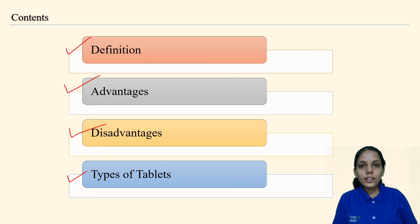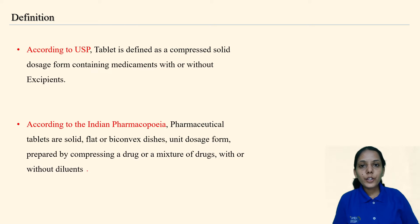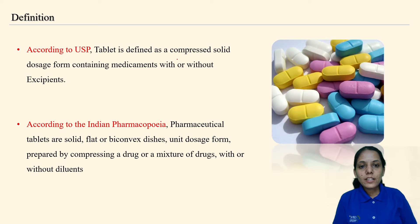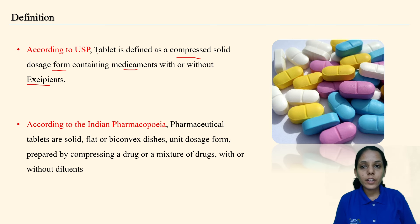Let's start with the introduction. Tablet is a unit dosage form — the entire dose is present in a single tablet. It is compact and very conventional; most patients are used to tablets compared to parenteral or other dosage forms. According to USP, a tablet is defined as a compressed solid dosage form — whatever the blend is, it will be compressed using a compression machine. It contains the medicament with or without excipients, depending on the formulation.